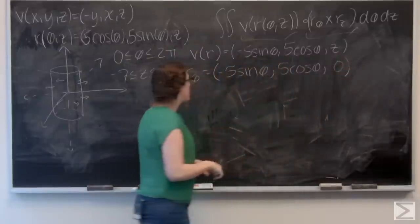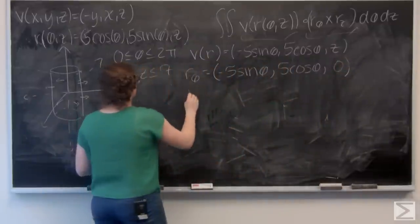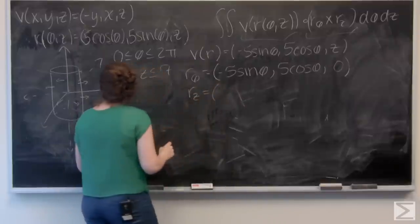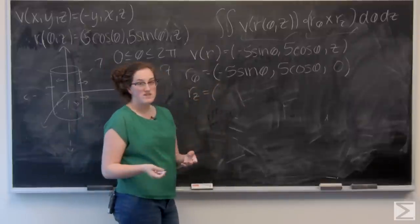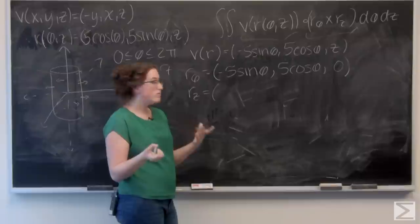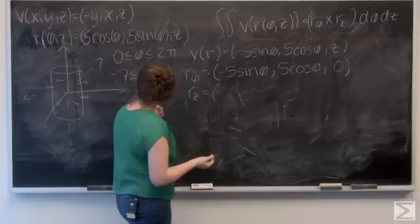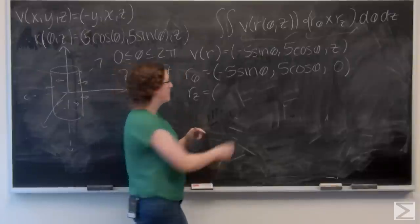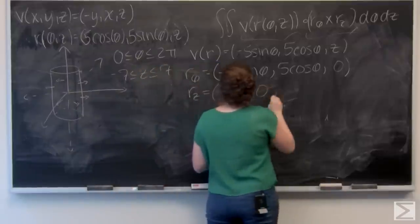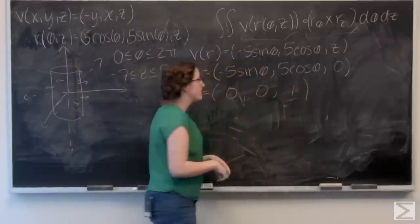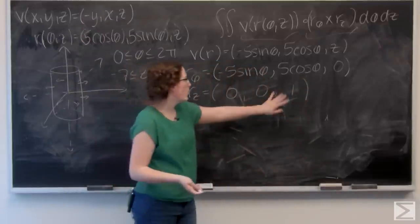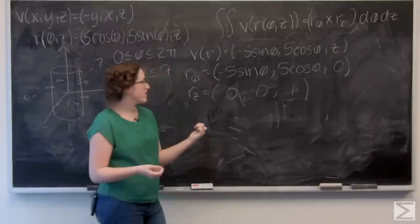Now let's find r z. So 5 cosine theta and 5 sine theta are like constants. They don't have any multiples, factors of z. So those are both going to differentiate to 0. And then the partial derivative of z with respect to itself is just 1. So now I want to find this cross product.